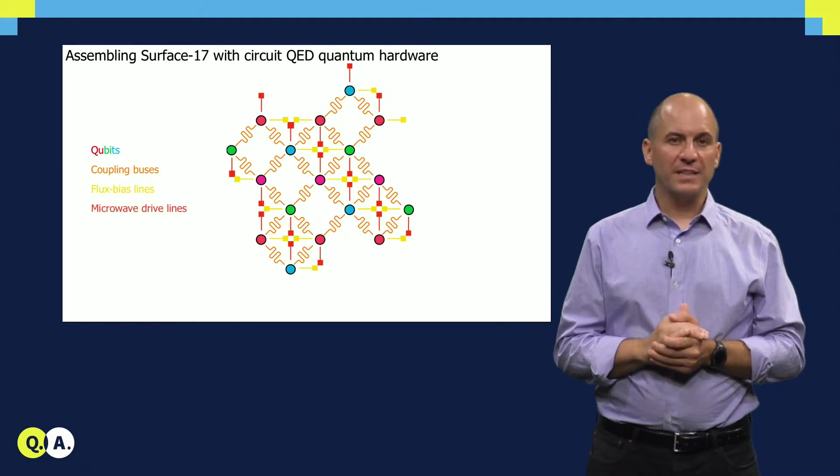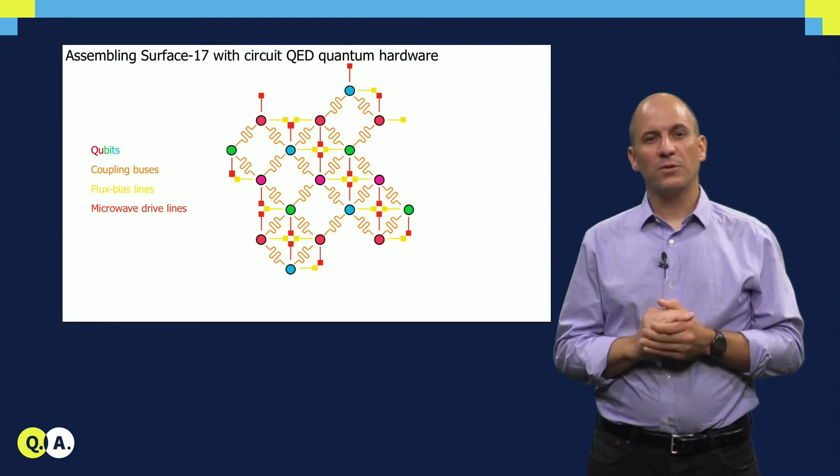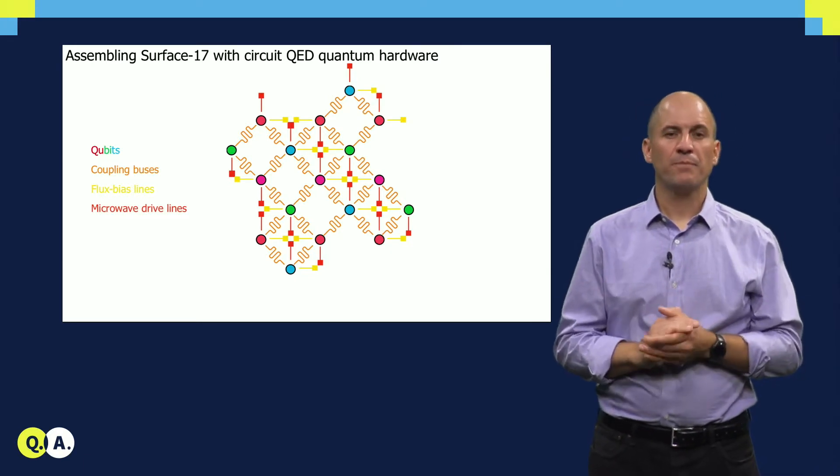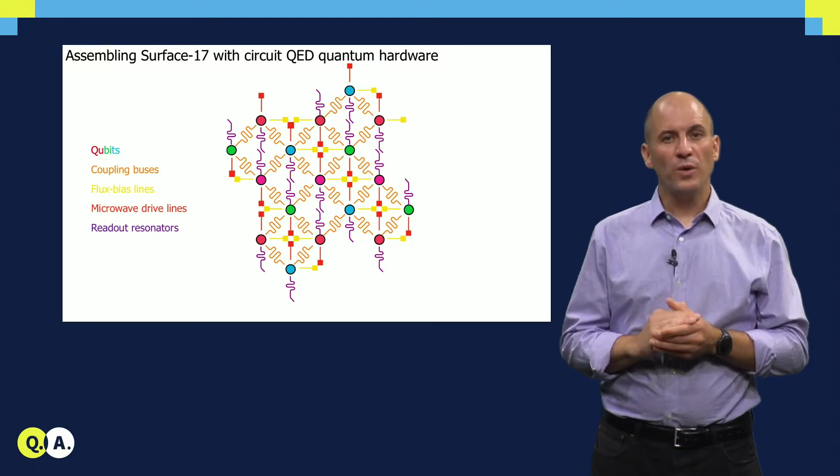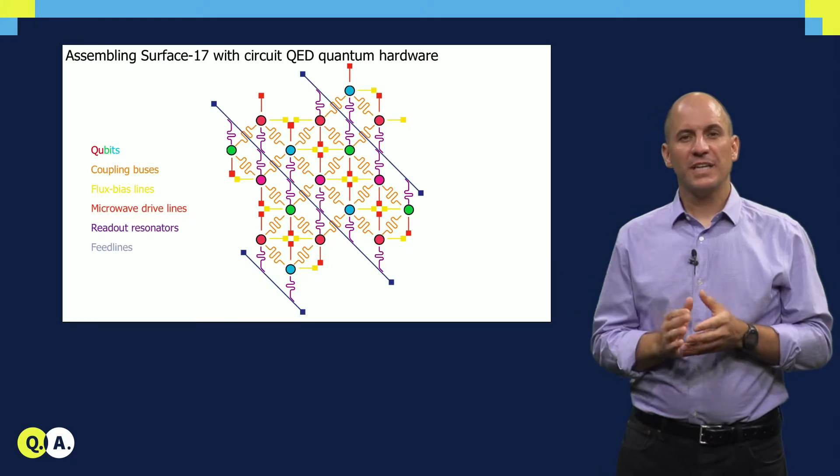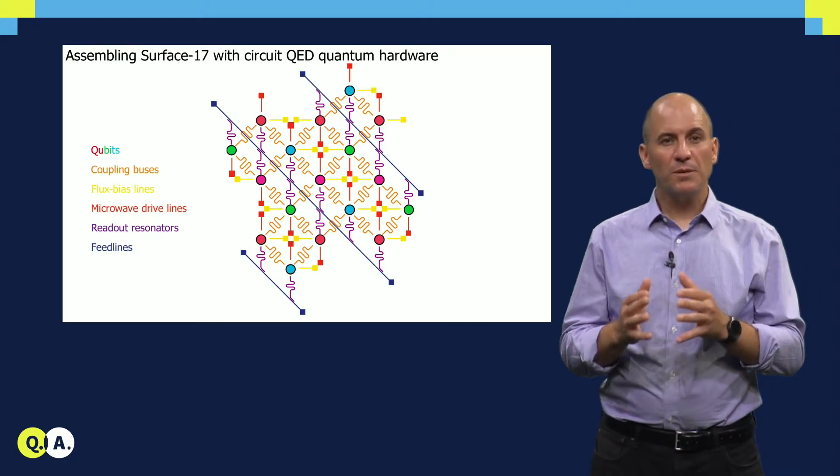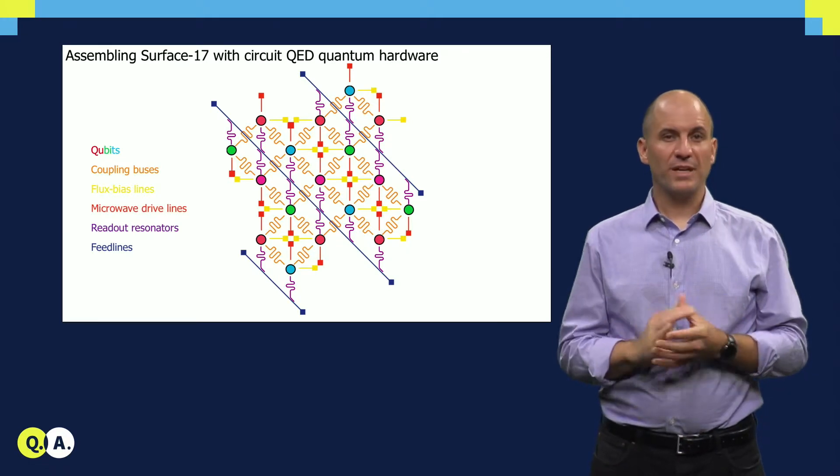To perform single qubit gates, we follow the approach introduced by Brian, adding a dedicated microwave driveline to each qubit. Finally, in order to measure each qubit individually, we add dedicated readout resonators. These readout resonators are coupled to diagonally running feed lines and probed independently using frequency division multiplexing, as described by Niels.